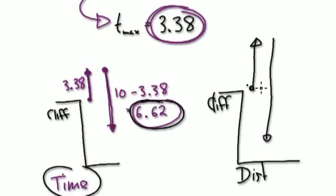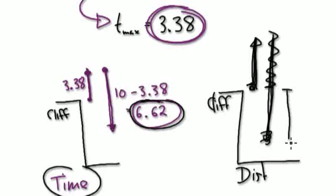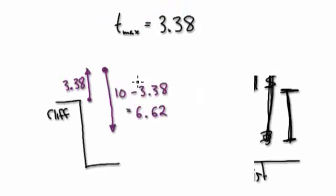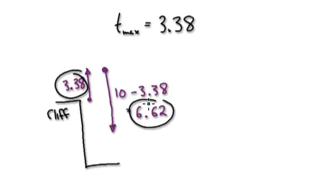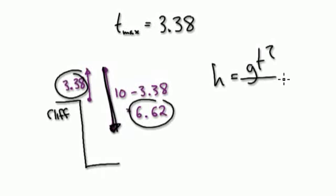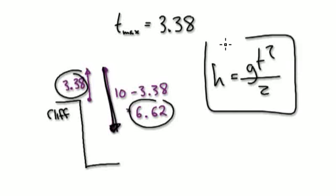This is our distance diagram. We need to know the distance here. Once we have the distance to max height and the distance of free fall, we can take one from the other and stick a minus sign in front of our answer — that will give us the displacement. So far we've only got the time to max height and the free fall time. To find out the free fall distance, jump to the free fall formula. But first, we need to find the distance to maximum height.